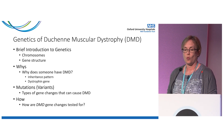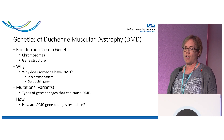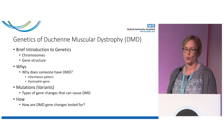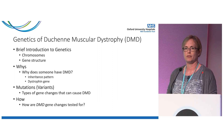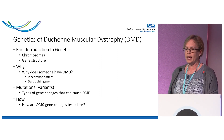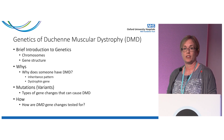I'll then move on to the why — so why does someone have Duchenne Muscular Dystrophy? I'm then going to swap it around and talk about the mutations, or what I'll refer to as variants, the types of gene changes that can cause Duchenne, and then how — so how do we actually test for these gene changes in the lab?